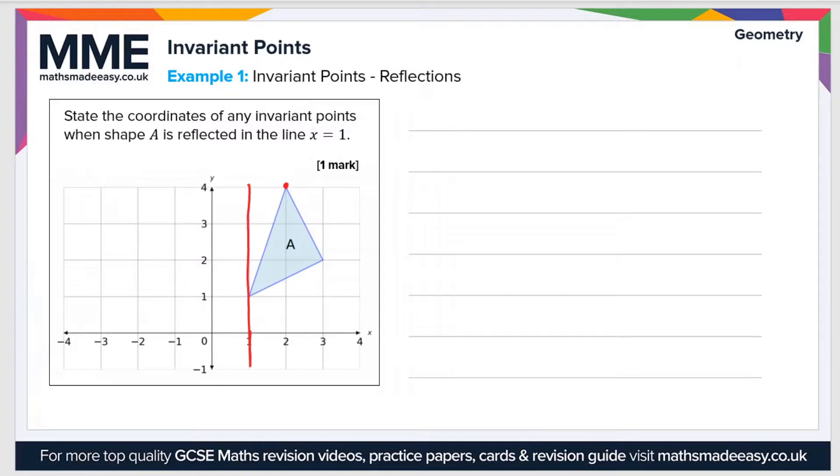So here this top point is one square away, so it'll end up one square away on the other side of the line. And this point is two squares away, so it'll end up two squares away here. And this one is on the line, so it'll end up on the line again.